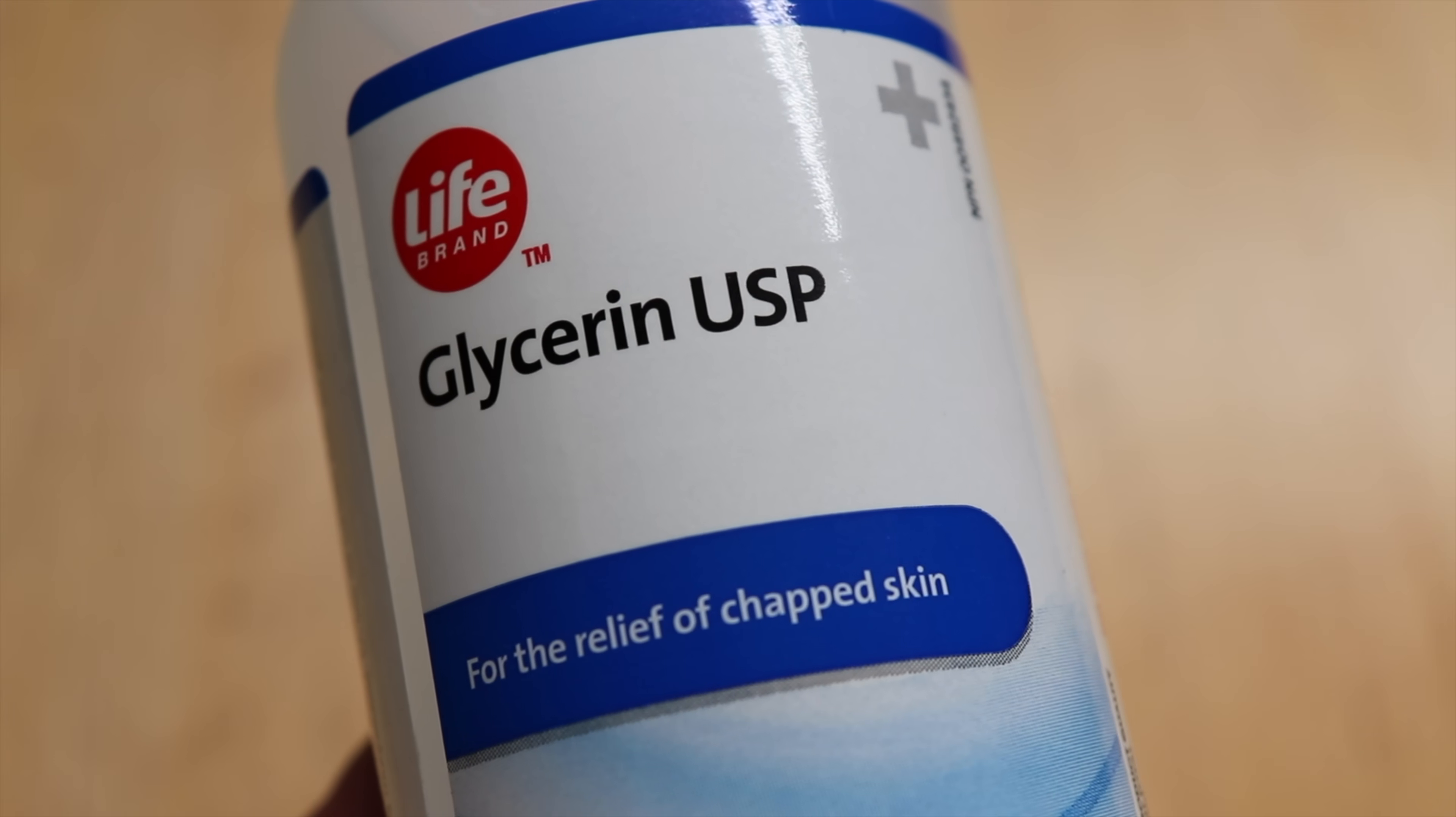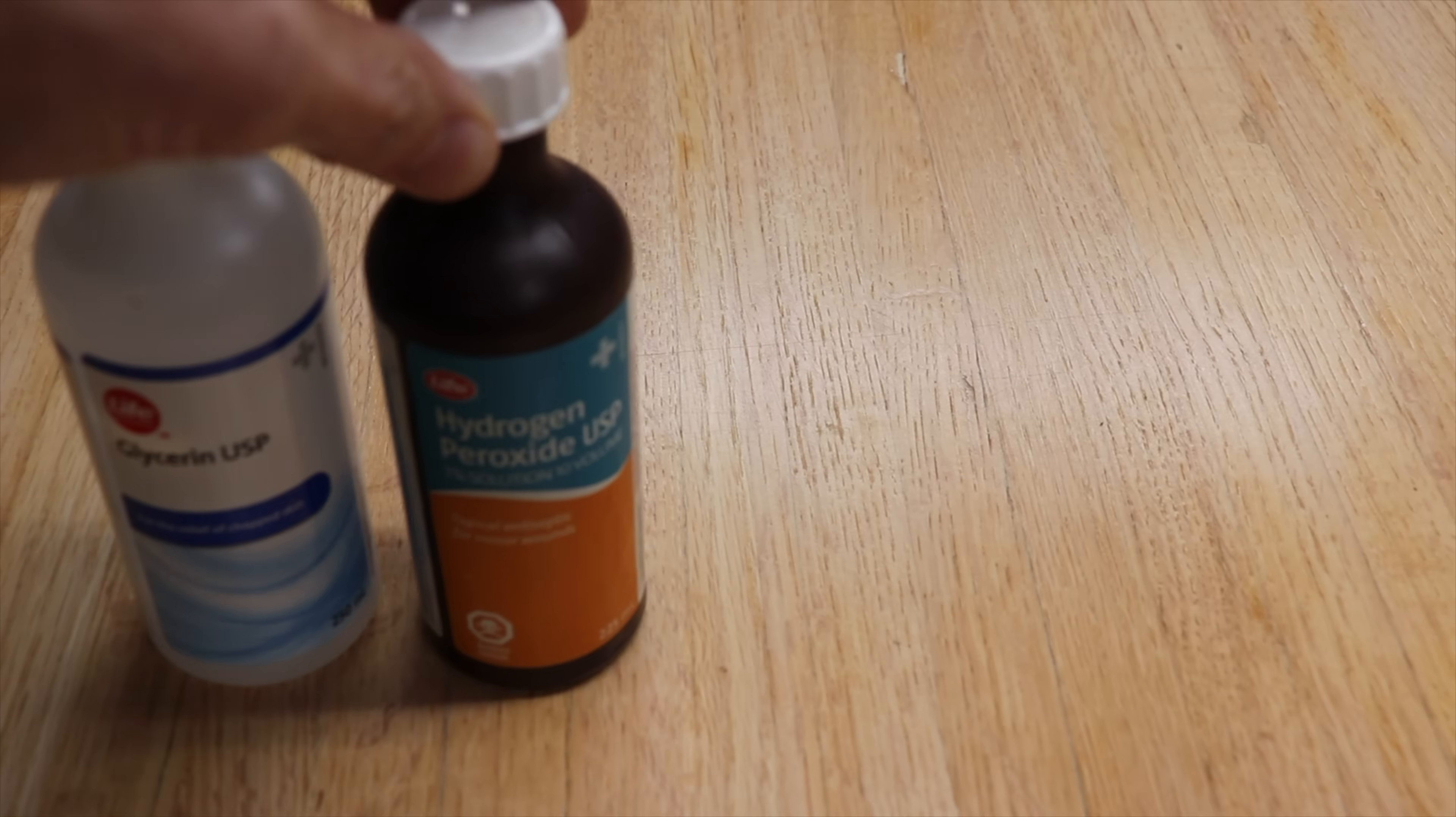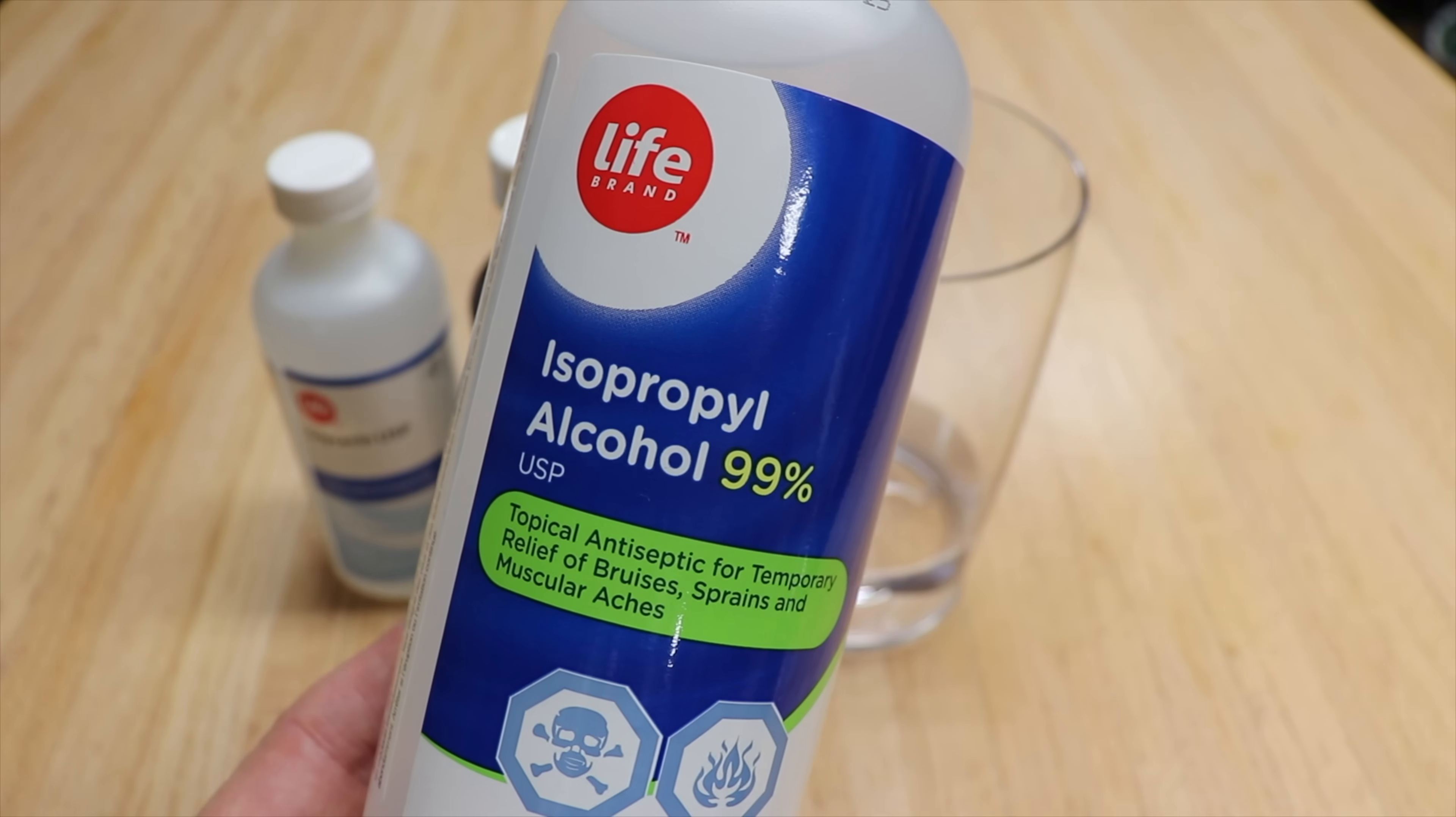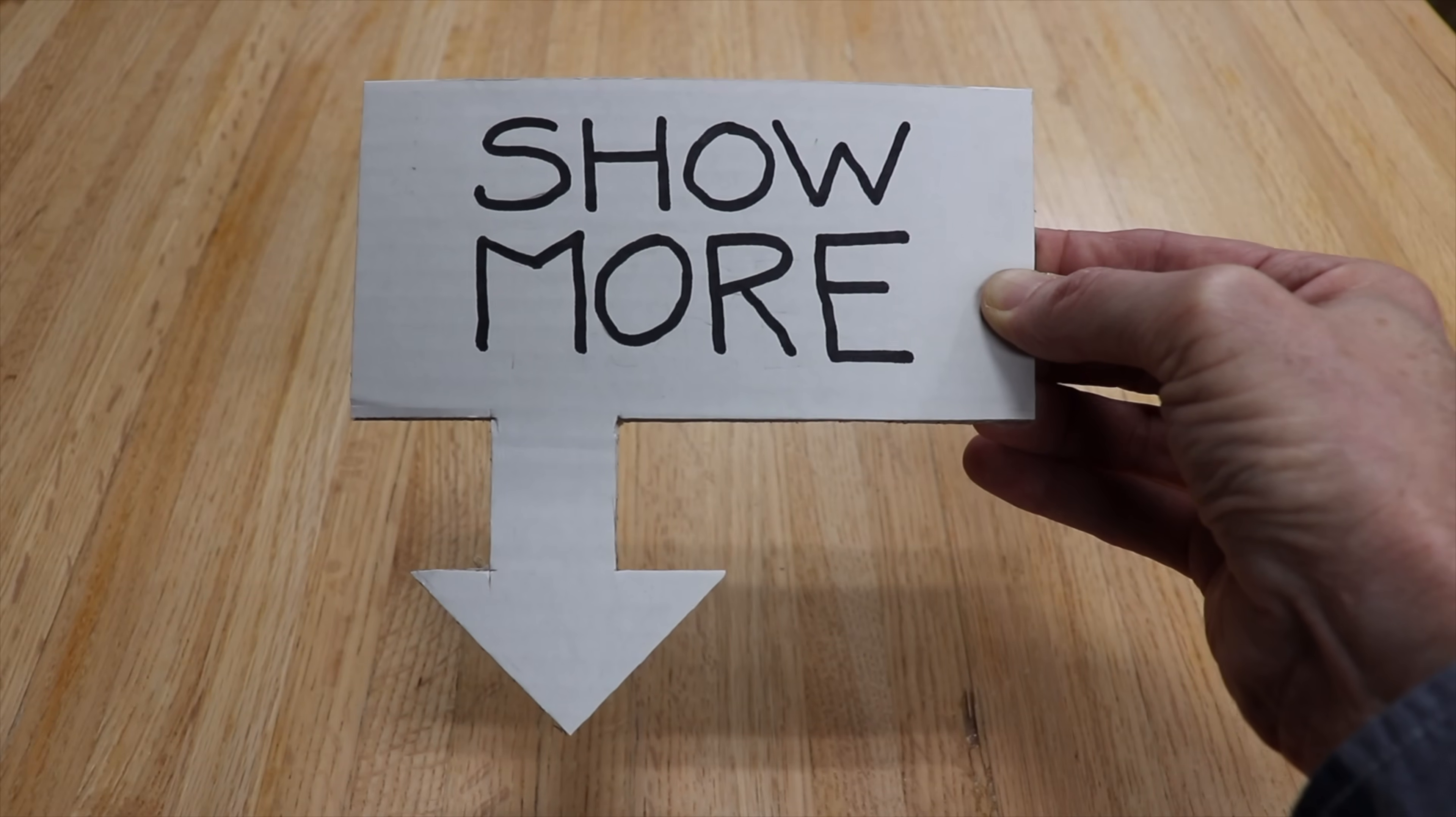So the first thing you're going to need is some glycerin, some hydrogen peroxide, some tap water that's been boiled and then cooled, isopropyl alcohol, a small dispenser or squirt bottle. And if you're interested, some of these items will be linked in the description below.